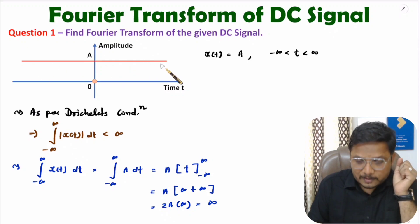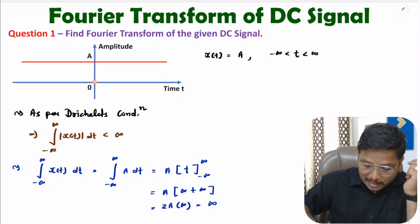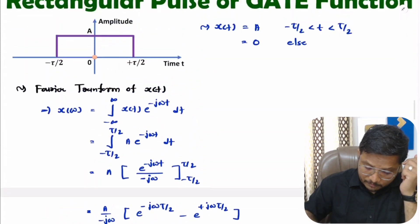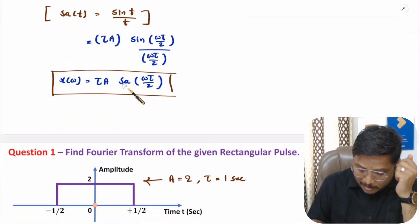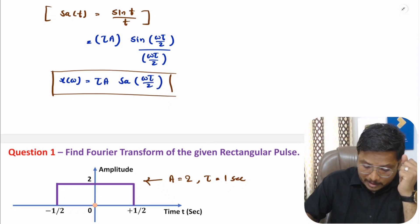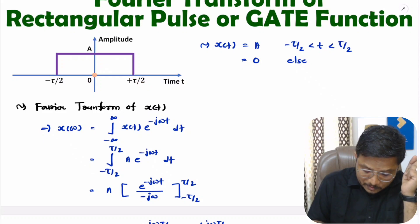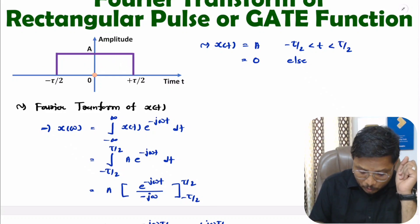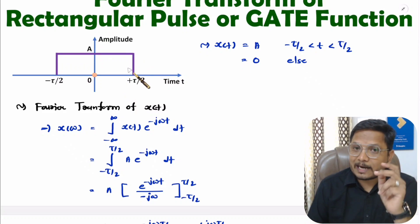Now if you observe this signal, it is having range from minus infinity to plus infinity. In my earlier videos, I have explained the Fourier transform of a rectangular pulse — that is 2A with the sinc function of ωτ/2. Here the value of τ is ranging from minus τ/2 to plus τ/2, so that is one rectangular pulse. With the DC signal, this value of τ is going towards infinity. In that case, this will become a DC signal — if τ goes towards infinity, the rectangular pulse becomes a DC signal.